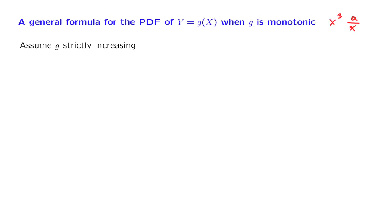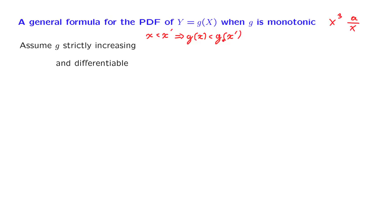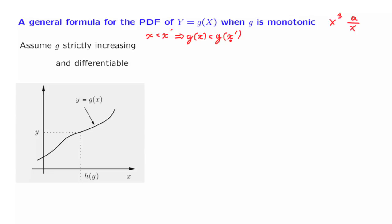Let us assume that g is a strictly increasing function. What that means is that if x is a number smaller than some other number x prime, the value of g(x) is going to be smaller than the value of g(x prime). So when you increase the argument of the function, the function increases. To keep things simple, we will also assume that the function g is smooth — in particular that it is differentiable. Then we have a diagram such as this one, where y is given by a smooth, strictly increasing function of x.